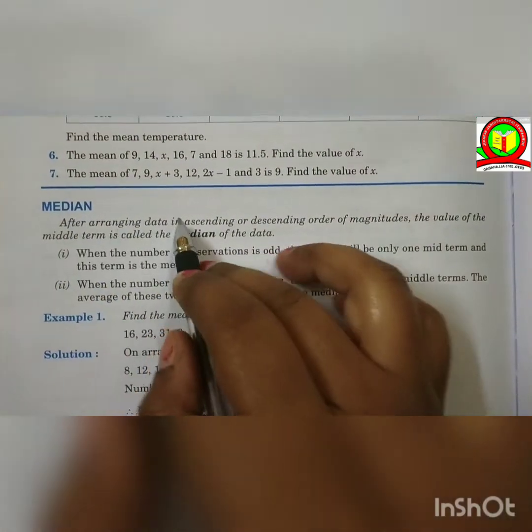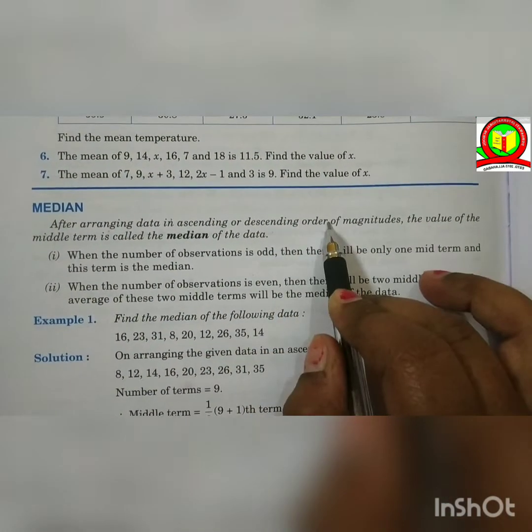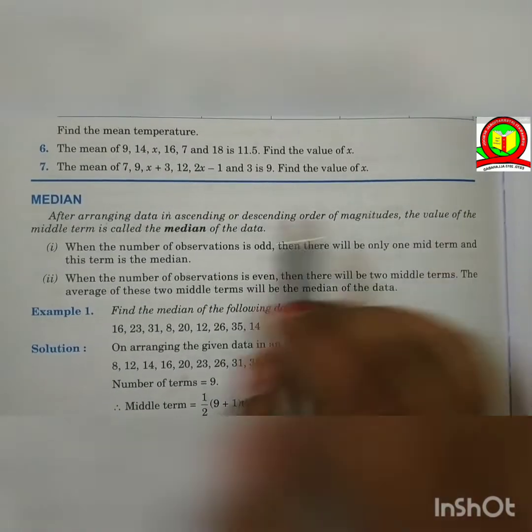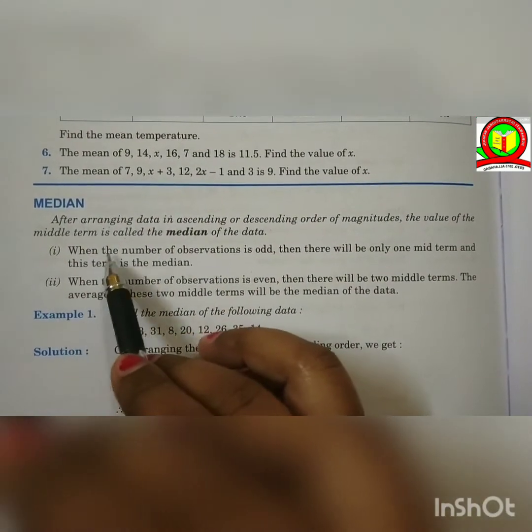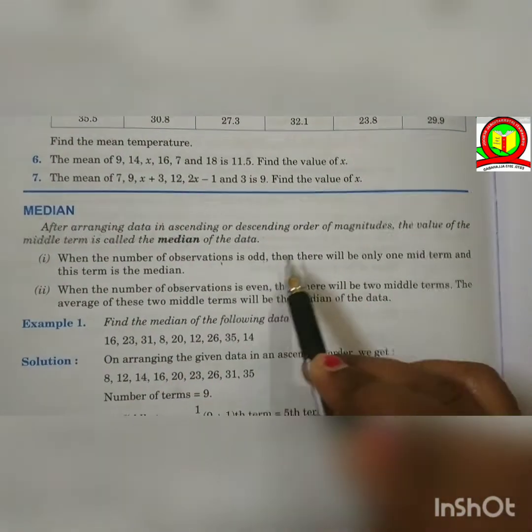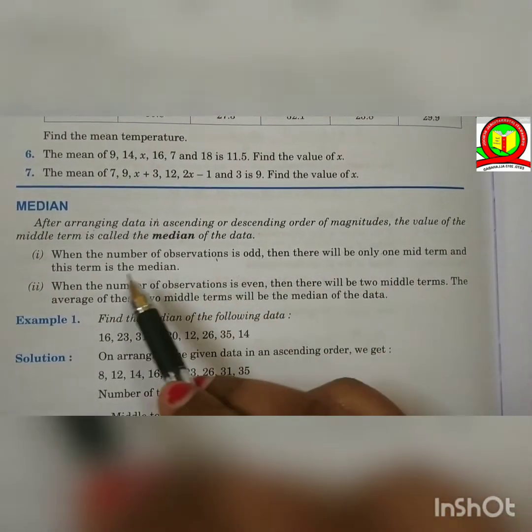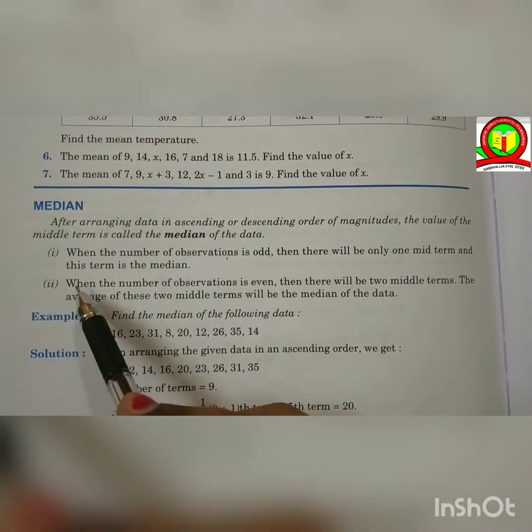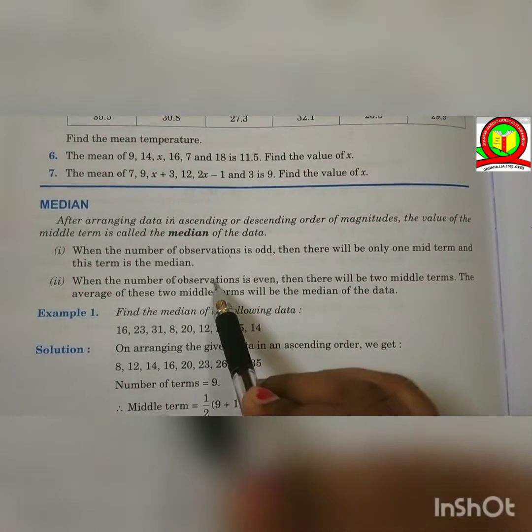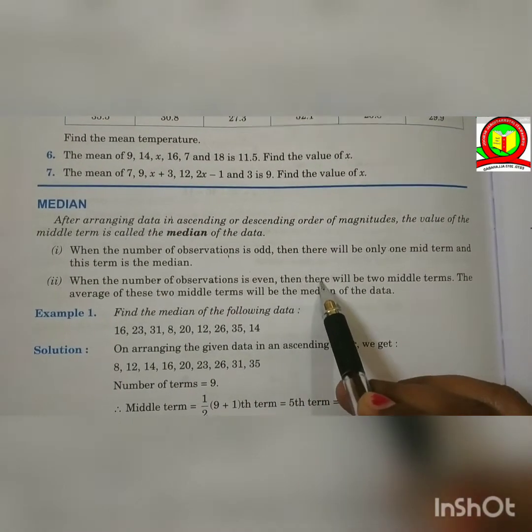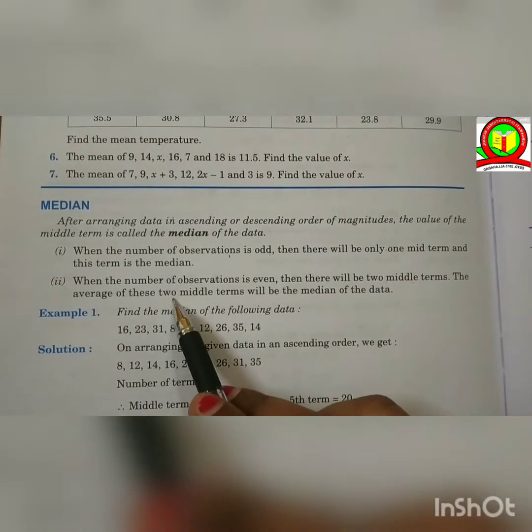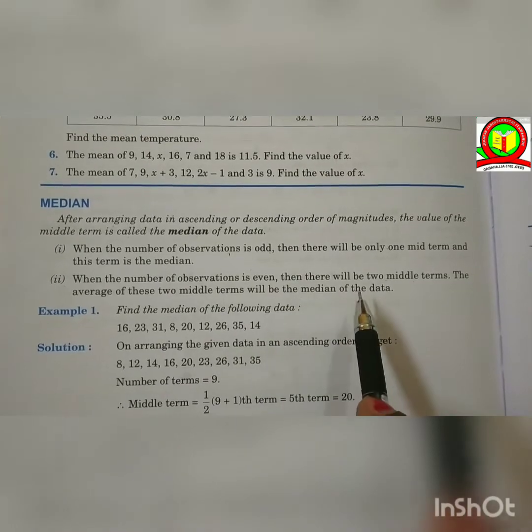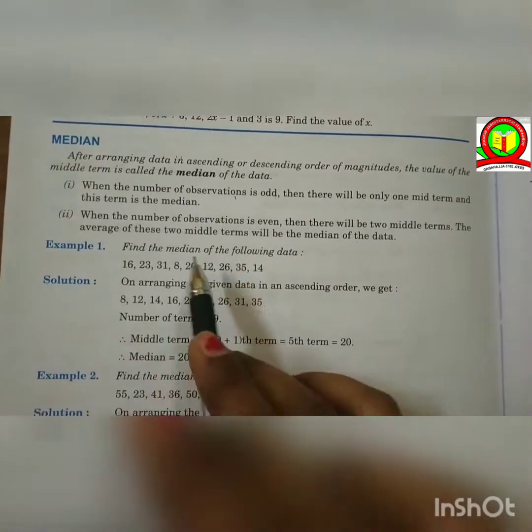Median. After arranging data in ascending or descending order of magnitude, the value of the middle term is called the median of the data. First is when the number of observations is odd, then there will be only one mid term and this term is the median. Second, when the number of observations is even, then there will be two middle terms. The average of these two middle terms will be the median of the data.